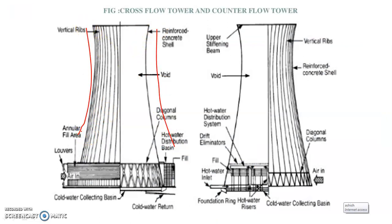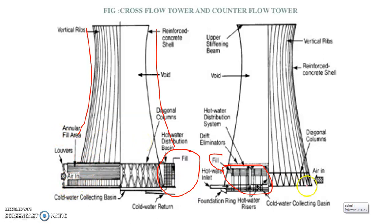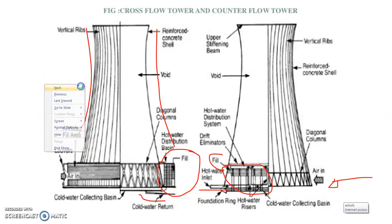These two figures indicate the two types: cross flow and counter flow cooling towers. In the cross flow type, the fill is located outside the system. In the counter flow type, the fill is located inside the cooling tower. The air inlet is at the bottom in both cases. You can also see the cold water return pipe and the hot water inlet pipe, highlighting the differences between the two types.